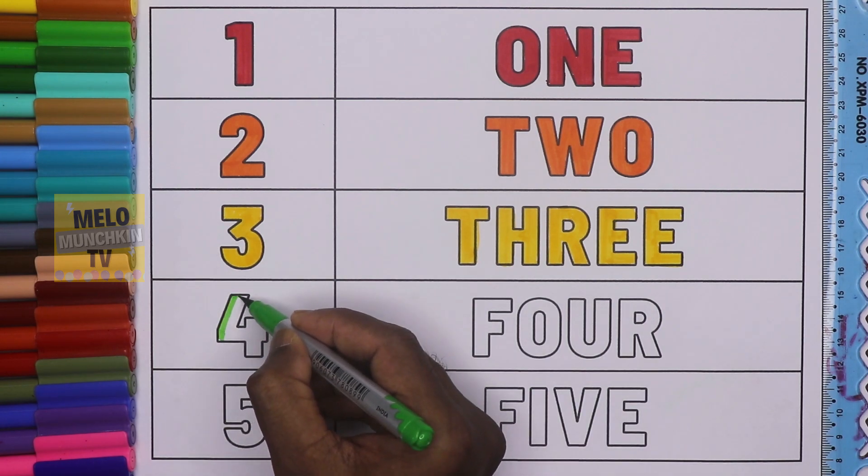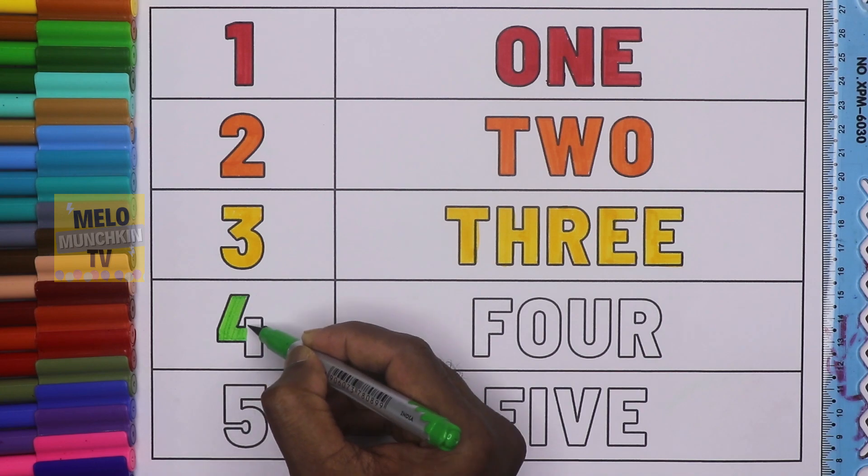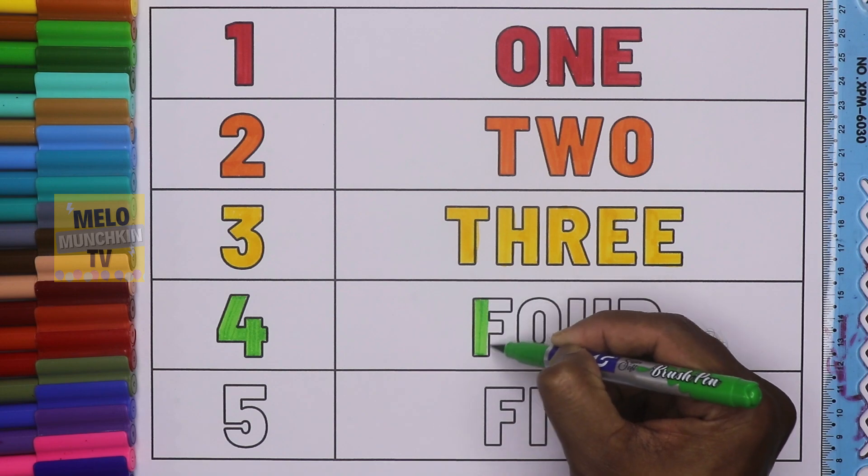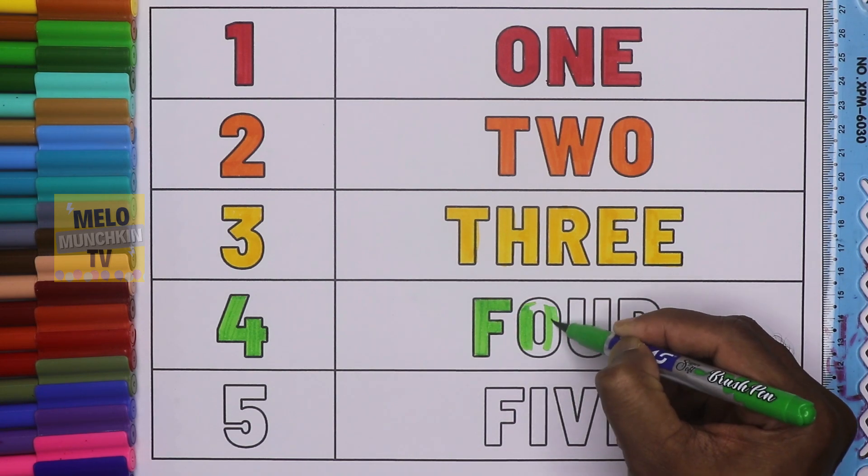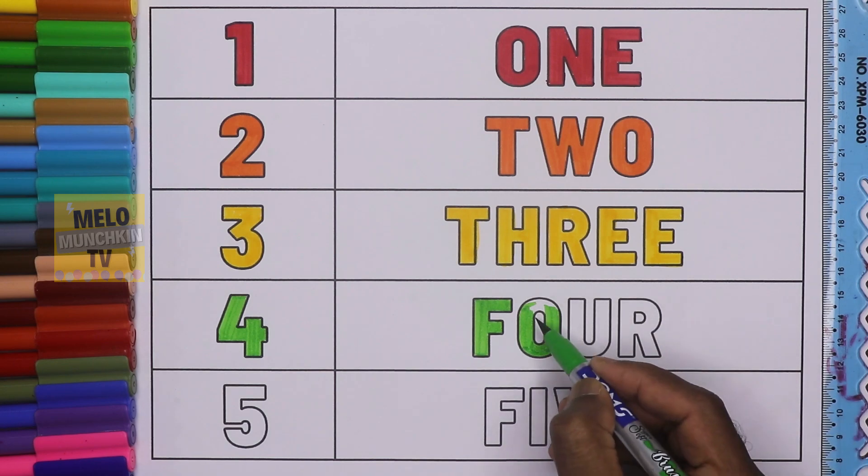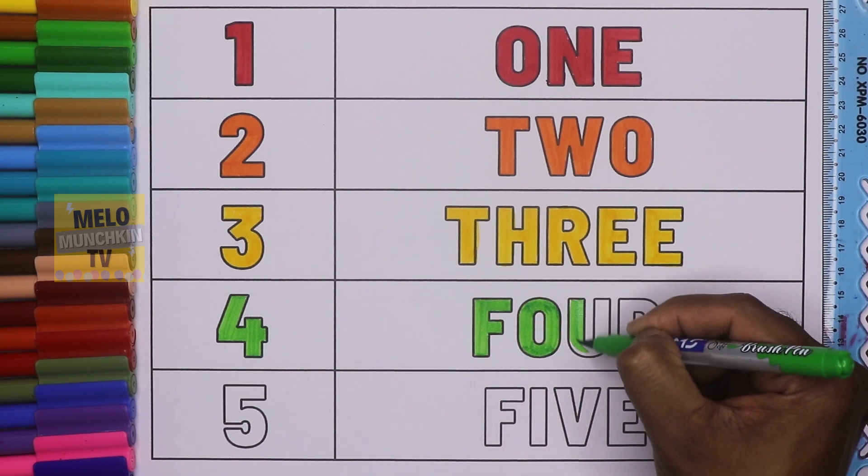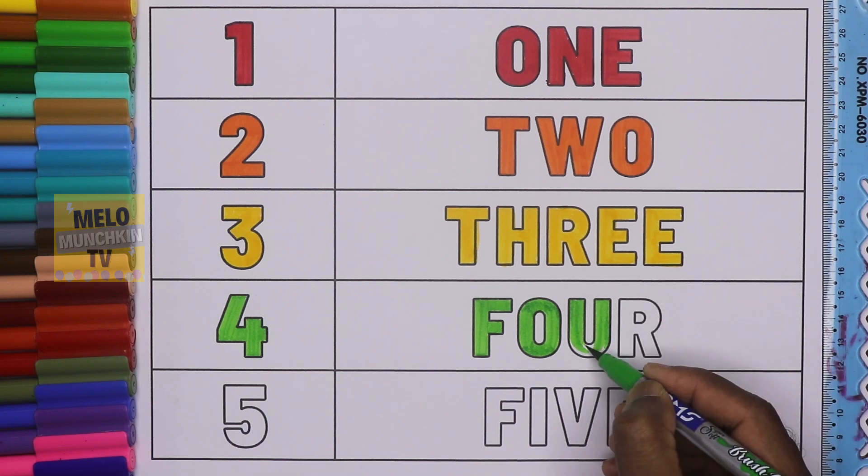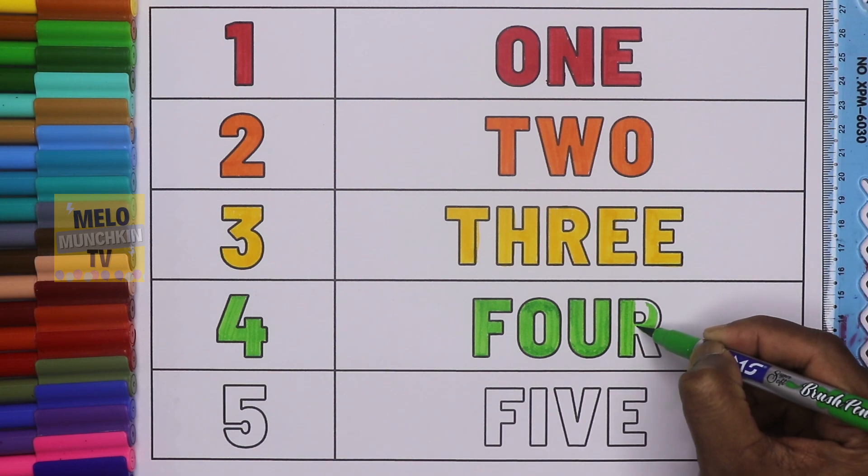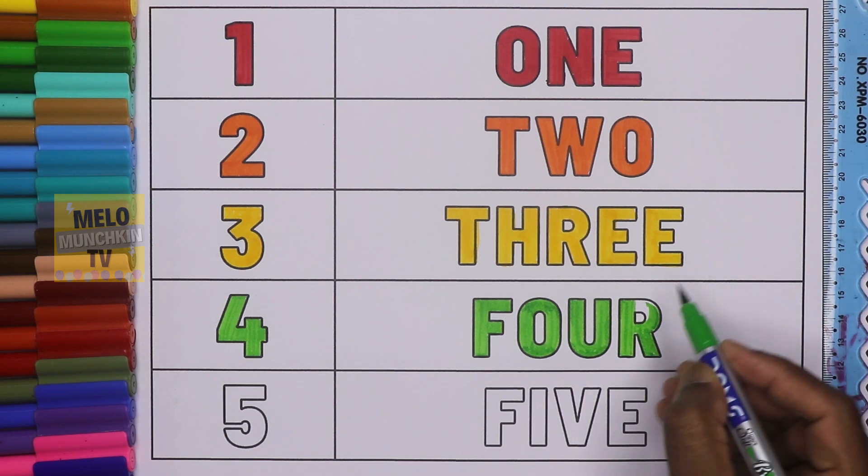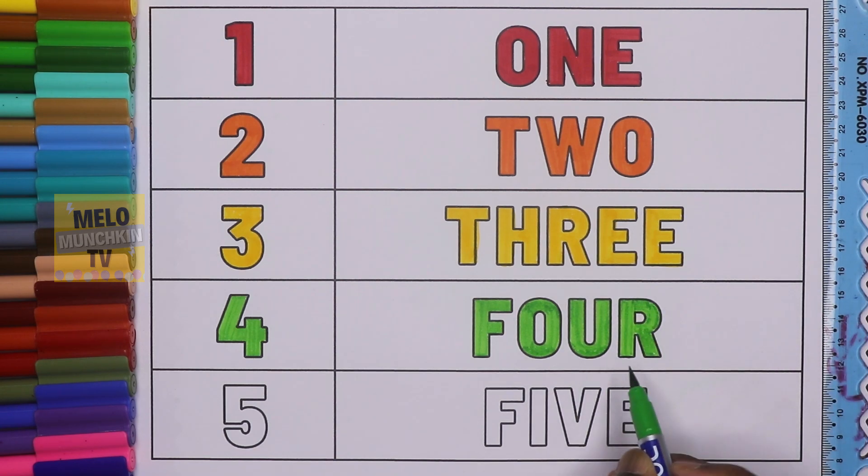Light green color. This is number 4. F-O-U-R, four. Let's color it. Four. F-O-U-R, four. F-O-U-R, four. And this is light green color.